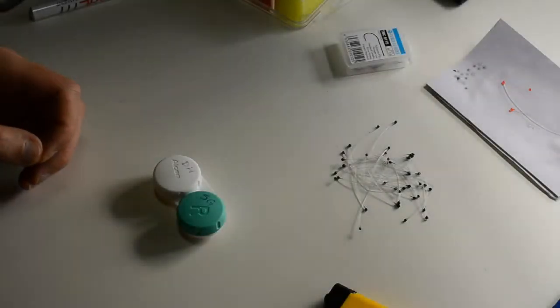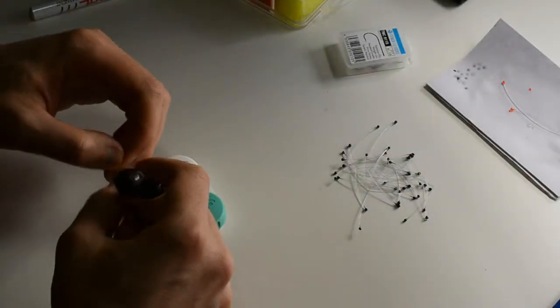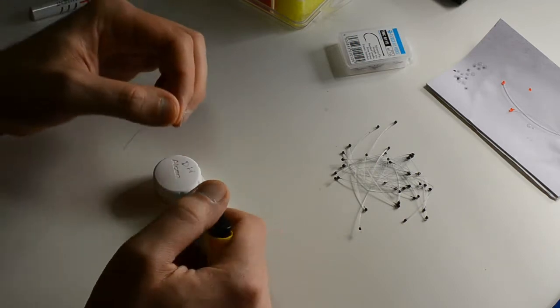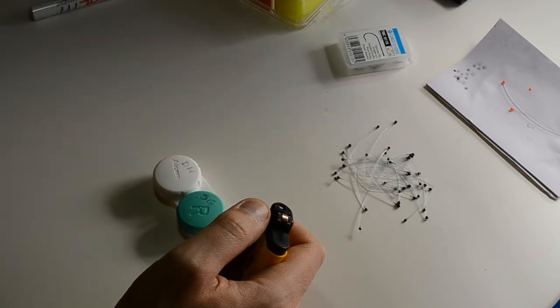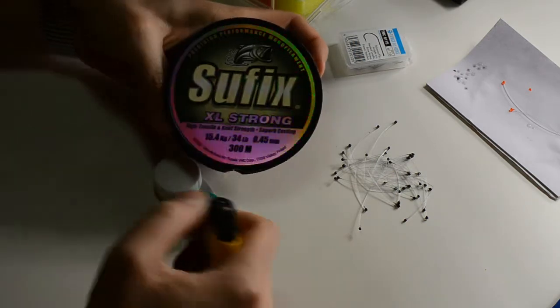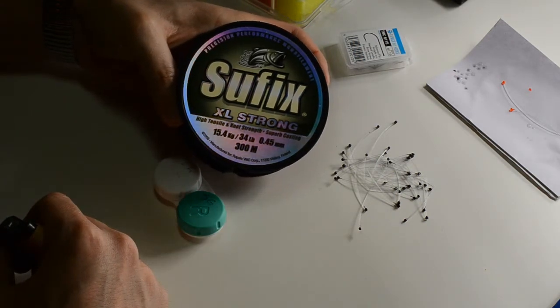Today I'm going to show you how to make shrimp fly eyes really easily using diamond hard. Take a piece of thick monofilament. I'm using 0.45 mm.